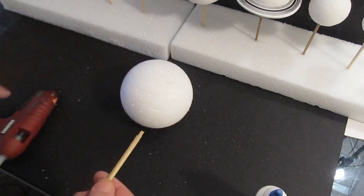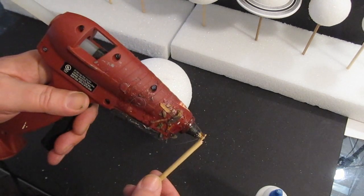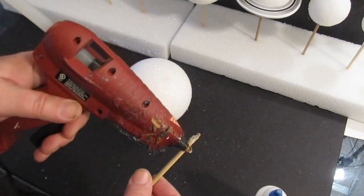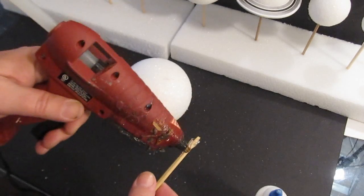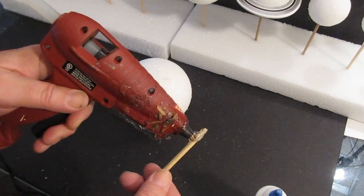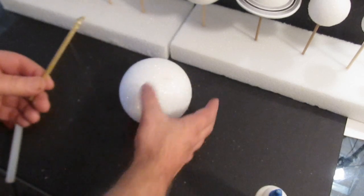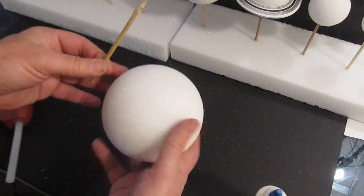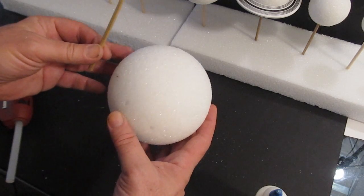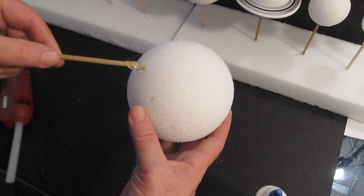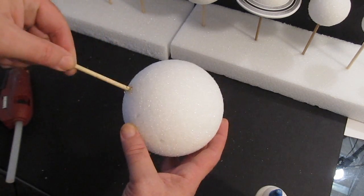Now you can glue the dowels into the planets and the sun. You can use any kind of glue. You can use any kind of white glue, PVA glue. If you use hot glue, let it cool a little bit. See how I'm taking my time there? I'm letting the hot glue kind of cool off a little bit because it can melt the foam and not form a good bond.